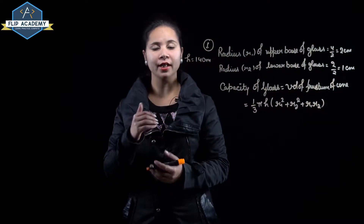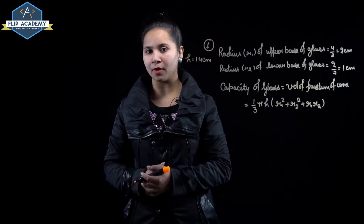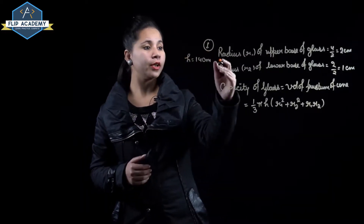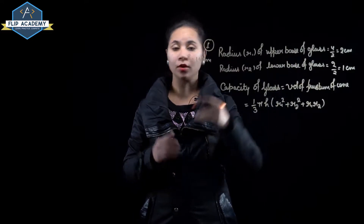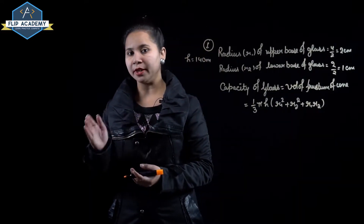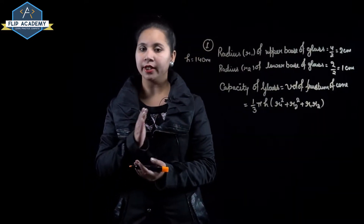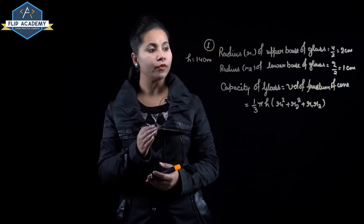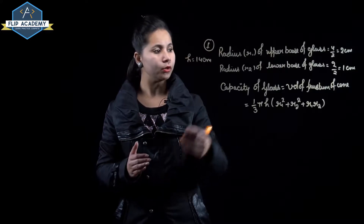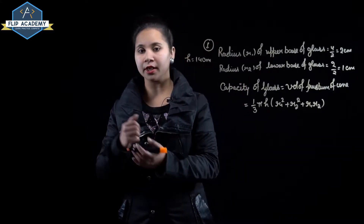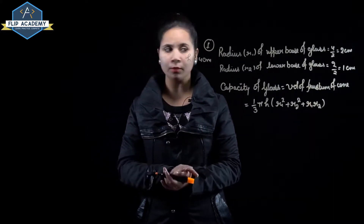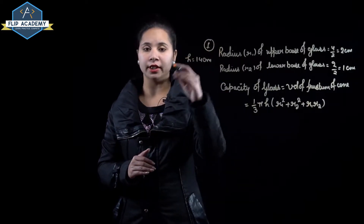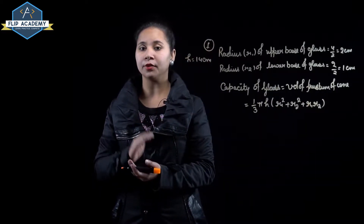In this question, the drinking glass is in the shape of a frustum. Radius of upper base of the glass is equal to 4 upon 2, which is equal to 2 centimeter. Radius of lower base of the glass is equal to 2 upon 2, equal to 1 centimeter. And the height of the glass is equal to 14 centimeter.